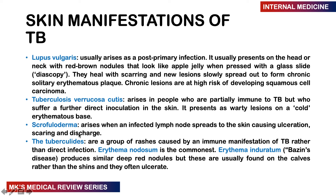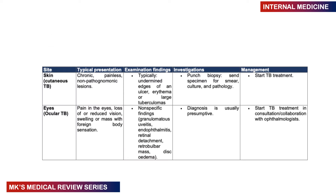Tuberculides are a group of rashes resulting from immune reaction to TB rather than direct infection. These include erythema nodosum — the commonest presentation — and erythema induratum, which produces deep red nodules typically found on the calves that often ulcerate. On examination, skin lesions are chronic and painless; ulcers are undermined. Diagnosis is by punch biopsy sent for smear, culture, and pathology, then TB treatment is started.